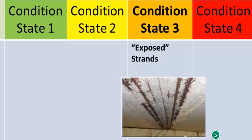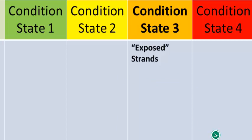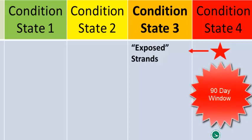The guidance in the manual says up to a quarter of the beam width with exposed strands — whether delamination, spall, or visible strands — stays in condition state three. If more than a quarter of the beam width is affected, inspectors are encouraged to place those linear feet into condition state four. Even if you have one linear foot in condition state four, that quantity requires a structural review. That review may indicate no impact to capacity, allowing the quantity to move back to condition state three before the report is finalized or approved by reviewers.